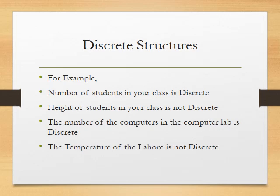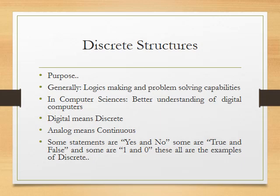Another example: when you go to the mosque for prayer, the times for sunrise and sunset are given to us in a specific numerical form. Those values on a digital watch can be considered discrete values. So in this way there are many more examples of discrete structures, including problem-solving capabilities.